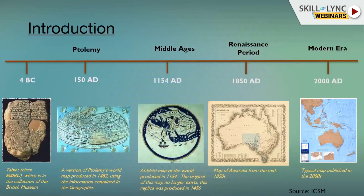Going back to history, on the left we have a tablet made in 600 BC — one of the relics identified as showing how people communicated about mapping or conveyed information about various places. Moving into Ptolemy around 150 AD, and slowly coming into the middle ages, you will see more Islamic influence in map-making, where they introduced a lot of art and motif culture into mapping.